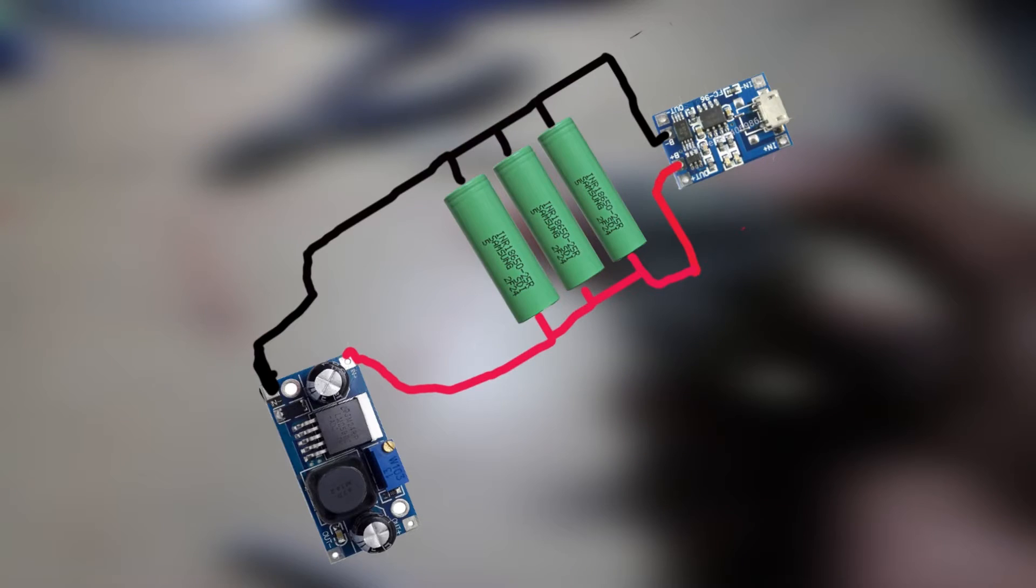Then, I soldered two wires to each side of the battery pack and connected positive to positive and negative to negative with the charging module and the voltage booster.